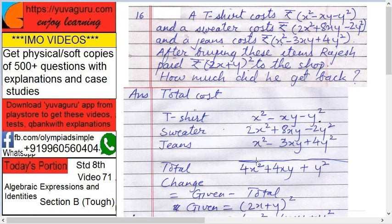Adding all items: this becomes 4x² plus 4xy plus y². The coefficients: 4 minus 3 gives 1, 8 minus 4 gives 4, and 2 plus 2 gives 4. So the total cost of all the items is 4x² plus 4xy plus y².